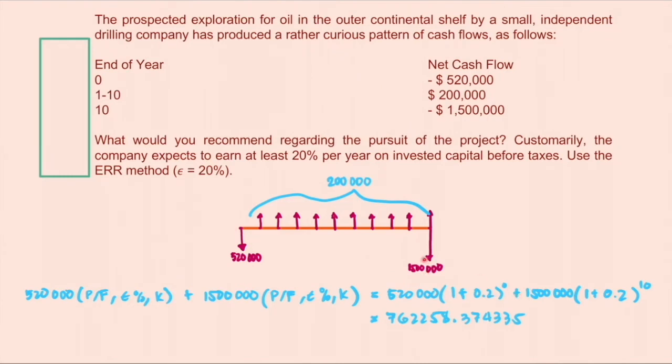Plus $1,500,000 times 1 plus 0.20 raised to negative 10. So we express this at the present time and we add the 2. So the resulting summation of present worth of the cost is $762,258.374335.